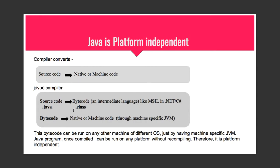The source code in your .java file is converted to a .class file containing bytecode, and this bytecode is not platform dependent — it can be run on any machine. This bytecode is then converted into native or machine-specific code on the particular machine it runs on, and for that you just need a machine-specific JVM. This is what makes a once-compiled Java program run on any platform without recompiling, making Java a platform independent language.